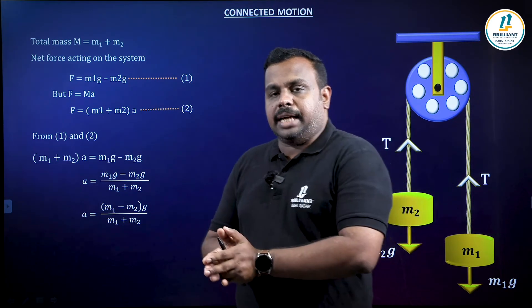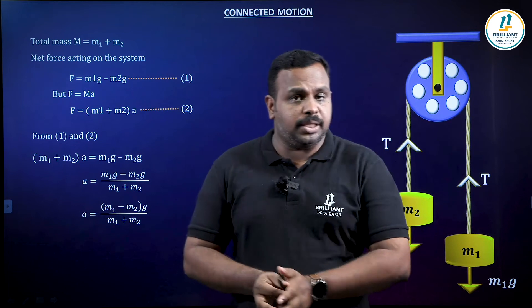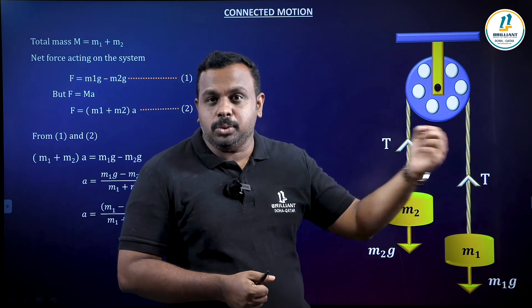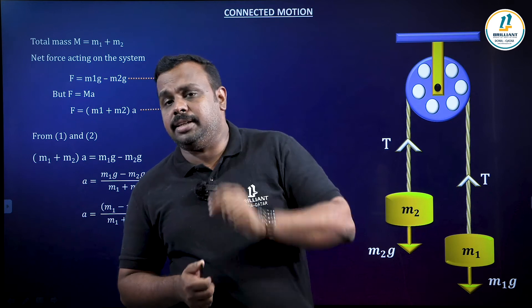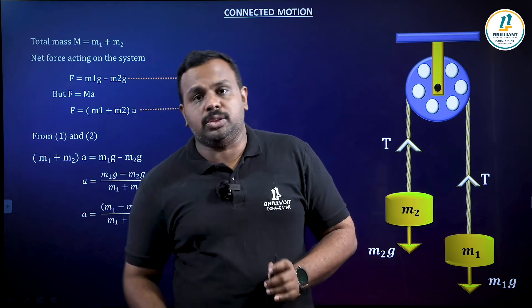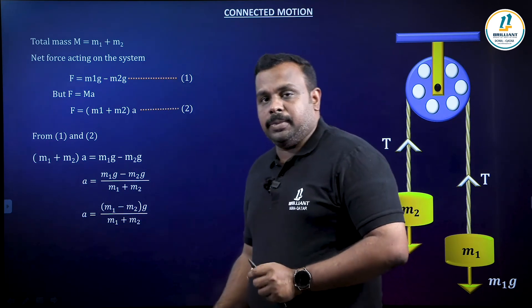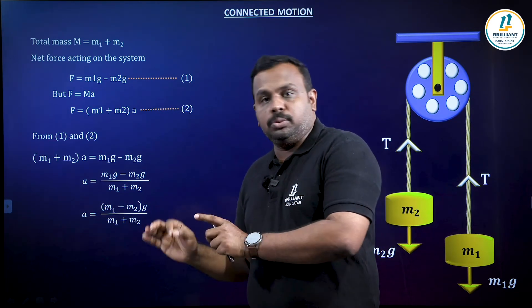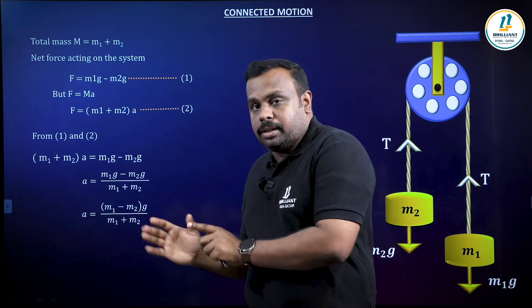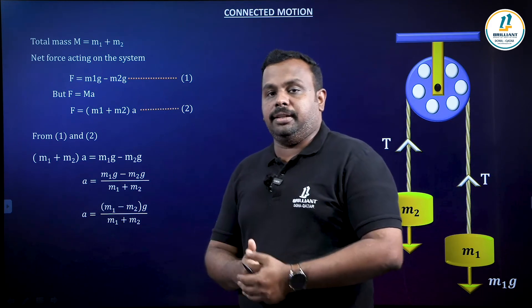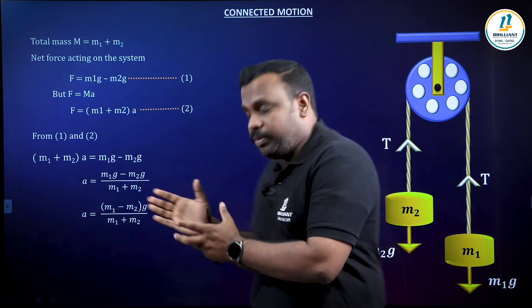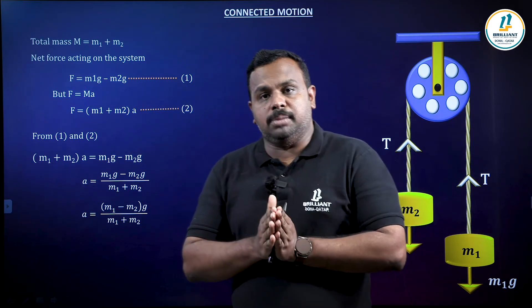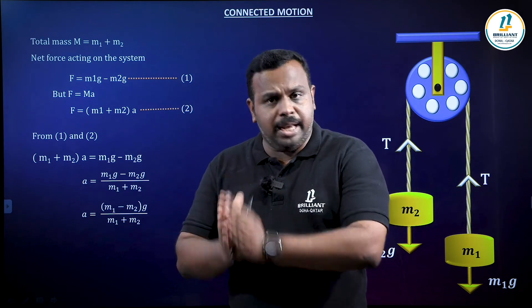Note that we derived this acceleration by assuming M1 is greater than M2. If M2 is greater than M1, the formula would change to M2 minus M1 in the numerator. So the acceleration formula A equals M1 minus M2 into g divided by M1 plus M2.